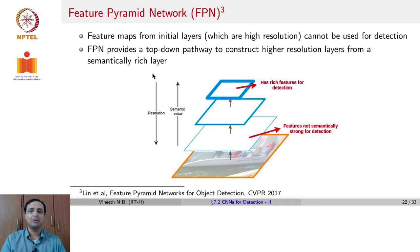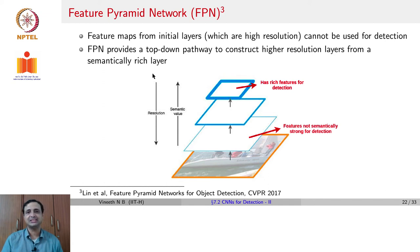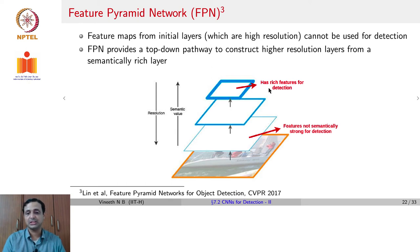A third single-stage detector approach is known as the Feature Pyramid Network, or FPN. FPN uses the idea that feature maps from initial layers may not be suitable for detection — they are high resolution but, as seen from CNN visualizations, initial layers may not capture the semantics of objects. As you go deeper, resolution gets lower and lower, but the features become richer. The higher-resolution feature maps are in the initial layers, but they lack semantic richness. We are caught in a dilemma where lower-resolution feature maps have richer features for detection, whereas higher resolution is in the initial feature maps. How to bridge this gap is what Feature Pyramid Network tries to do.